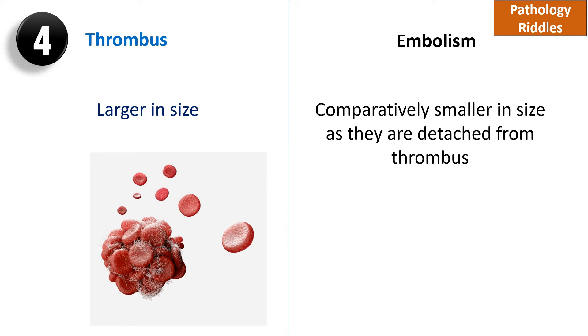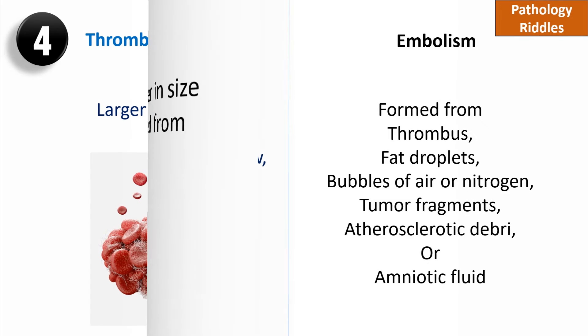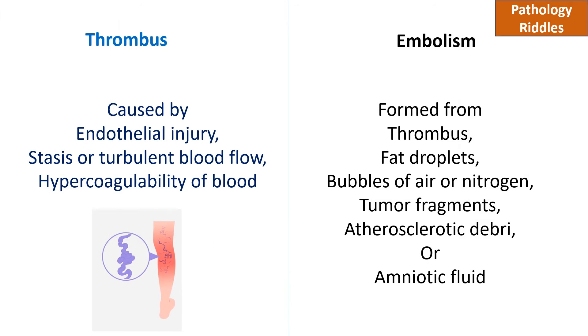A thrombus is usually larger in size, whereas an embolism is comparatively smaller in size, as emboli are detached from the thrombus.